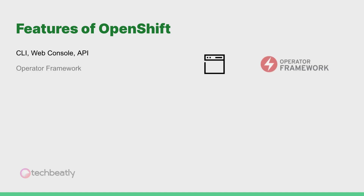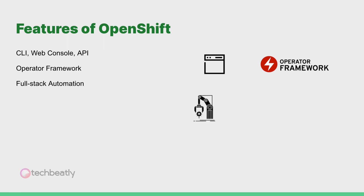The next feature is the operator framework. With the operators, you can install and manage Kubernetes applications and services with single-step actions. Another feature is full stack automation. You can deploy your application with a single click or by simply providing the source code repo URL. OpenShift will take care of the backend jobs including building the container image, keeping it in the internal registry, deploying containers, creating services and routes, etc.